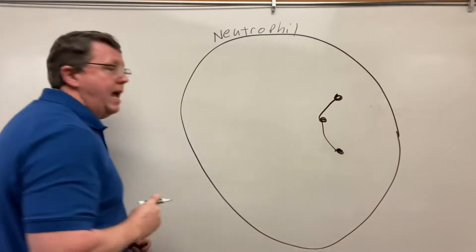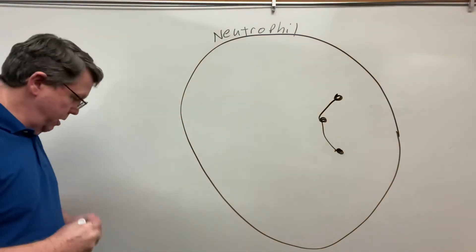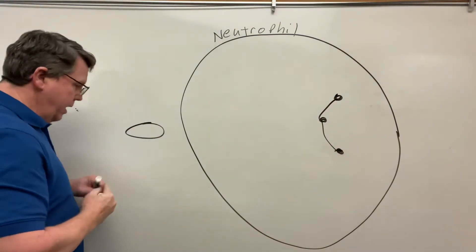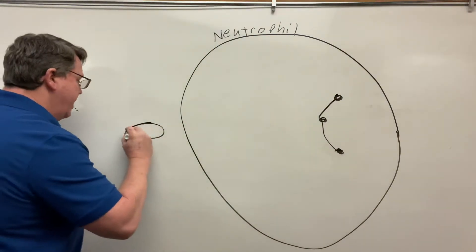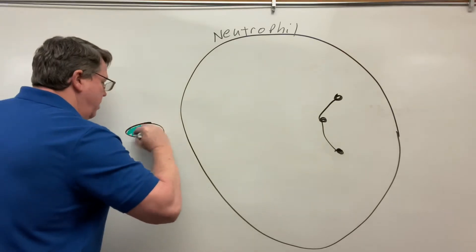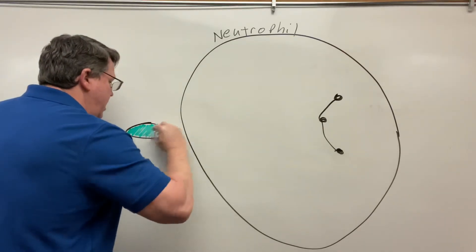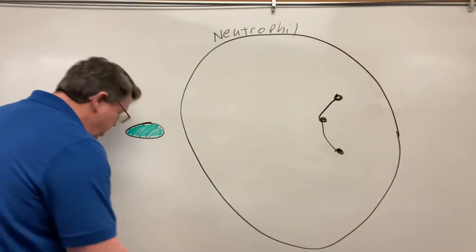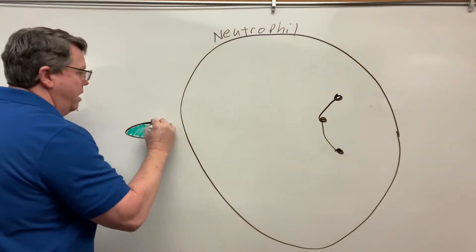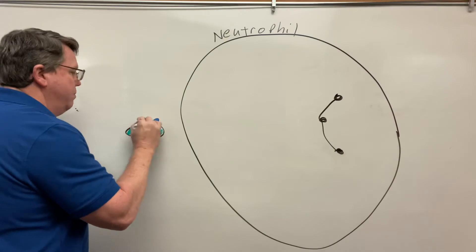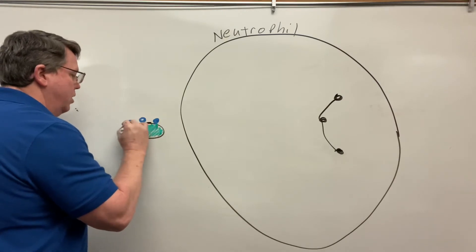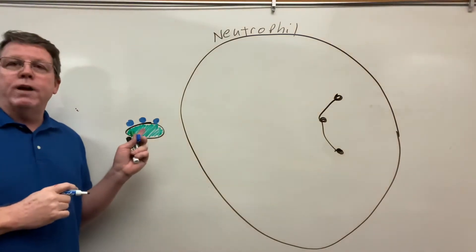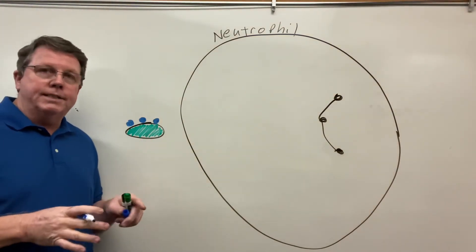Here's what happens: when the bacteria comes into the body, here's my bacteria. When it comes into the body, bacteria and basically all cells have markers on them. In this case we're going to call these antigens. What I mean by an antigen is these can be proteins or sugars, or sugar proteins called glycoproteins, that the body recognizes don't belong in the cell.